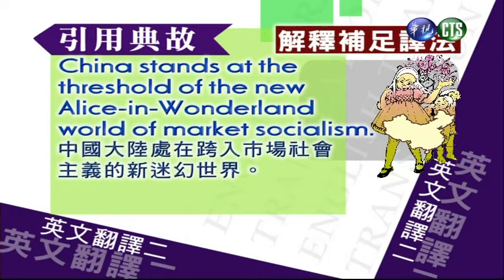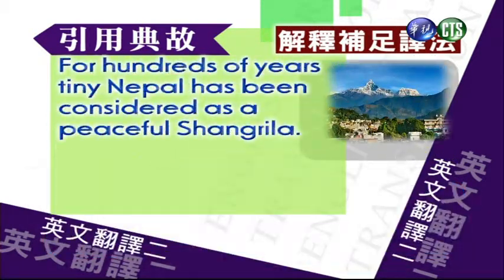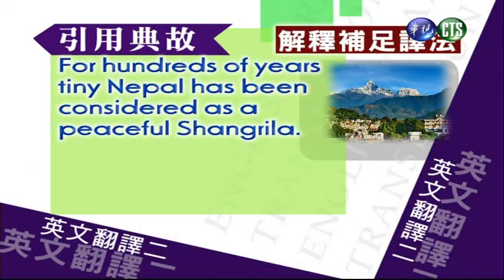中国大陆处在跨入市场社会主义的新迷幻世界。我们来做注释：Alice in Wonderland出自童话故事爱丽丝漫游仙境。书中的世界充满了荒谬怪诞的事件。此语隐含形容梦幻想象、不合实际、违背常理等的世界。